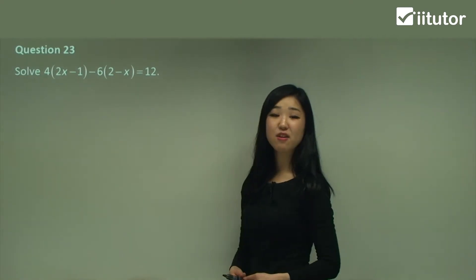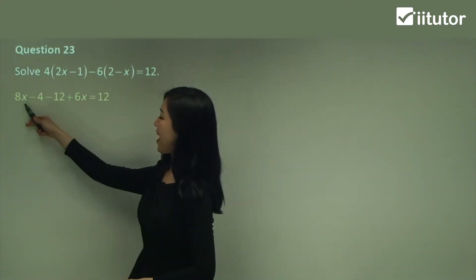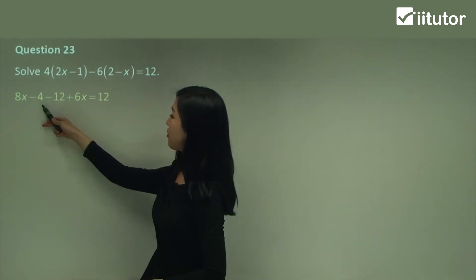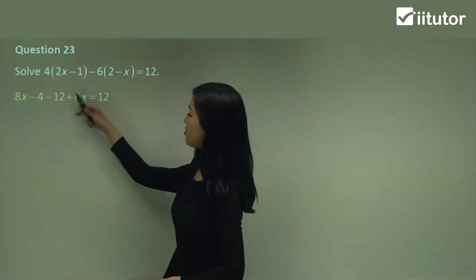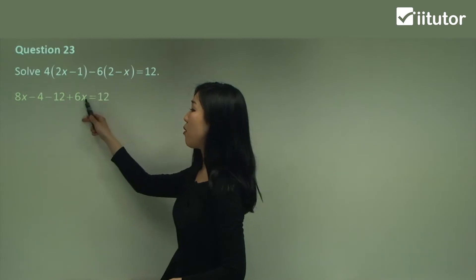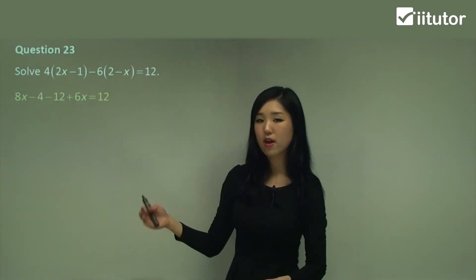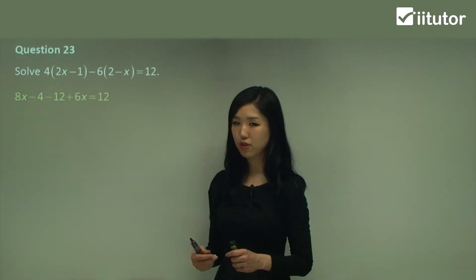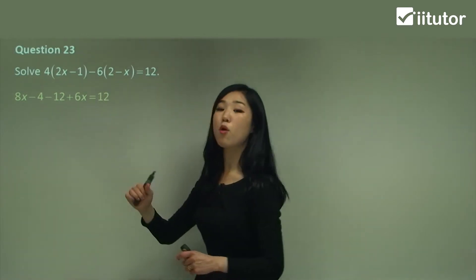Question 23. I really want you to try and pause and try this yourself. I think you guys can give it a shot and just watch me for you to check. So I'm going to expand. 4 times 2x is 8x. 4 times negative 1 is negative 4. Negative 6 times 2 is negative 12. And watch out here guys. Negative 6 times negative x. Negative negative is a positive. Make sure you always change that to a positive if we have a negative negative. That's where a lot of students make a mistake. So you must be careful. And then it's just going to be 6x. Positive 6x.